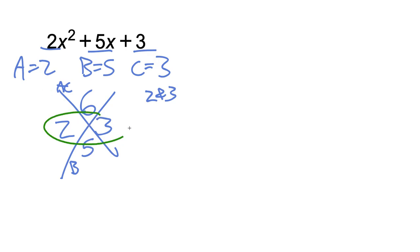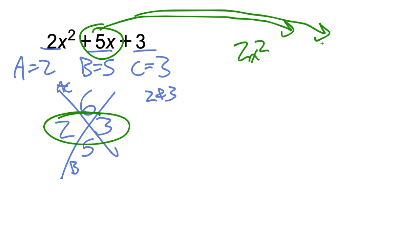So we have what we want, and we're going to rewrite this middle term as now two terms, the two terms you got in that magic X. So the 2x squared is left alone. The plus 3 is left alone, and then the middle term is now going to be rewritten as 2x plus 3x.